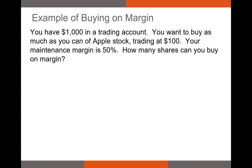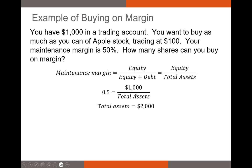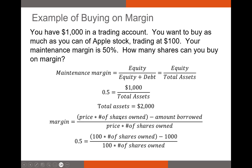Let's take a look at buying on margin in an example. You have $1,000 in a trading account and you want to buy as much as you can of Apple stock trading at $100. Your maintenance margin is 50%. How many shares can you buy on margin? Our standard maintenance margin formula is equity divided by the total value of our account — equity divided by equity plus debt, or equity divided by total assets. With a 50% maintenance margin and $1,000 in the account, total assets would be $2,000.